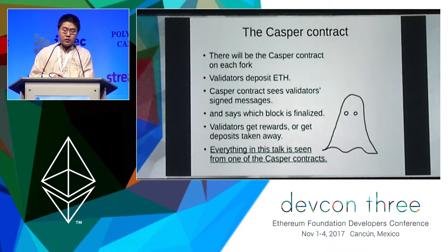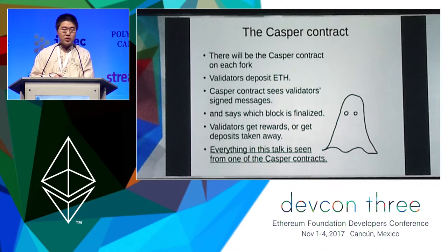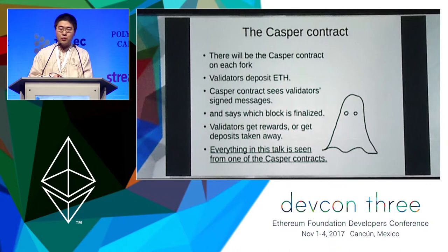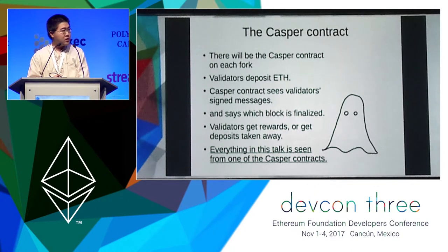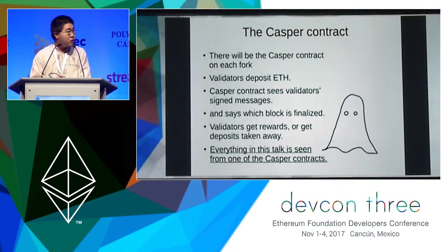When the validators do it correctly, they get rewards. When they make mistakes, their deposits are gone. We call these validators slashed when their deposits are taken away.